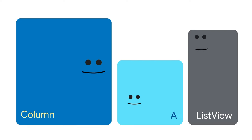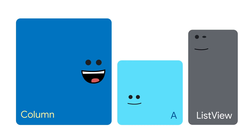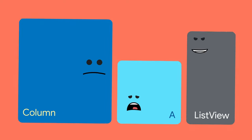But watch what happens when one of the kids is a ListView. The Column asks: 'Kids, if you could have any size you wanted, what would it be?' One child says: 'I want 20 pixels, please.' Then ListView says: 'I want everything — as much as possible.' The Column replies: 'But that's infinity.' And this is exactly what happens when you have an unbounded height error in your app.